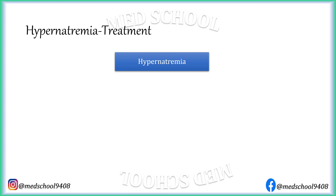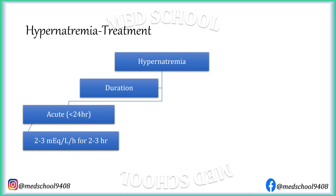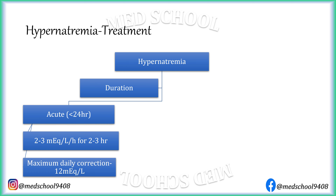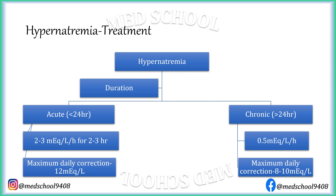For treatment of hypernatremia, duration is first assessed. Acute hypernatremia, which develops over less than 24 hours, needs sodium correction at the rate of 2 to 3 mEq per litre per hour for the first 2 to 3 hours, but maximum daily correction should not be more than 12 mEq per litre. In chronic hypernatremia, which develops over more than 24 hours, sodium correction should be at 0.5 mEq per litre per hour, with a maximum daily correction of no more than 8 to 10 mEq per litre.